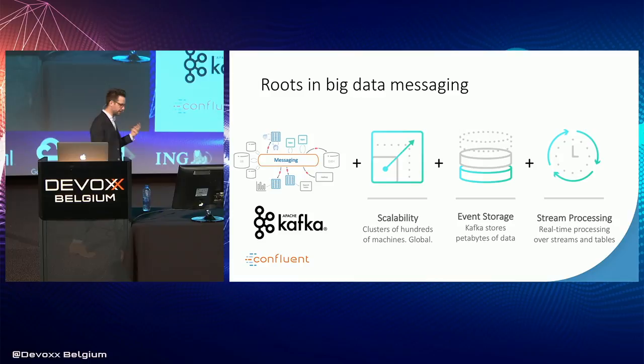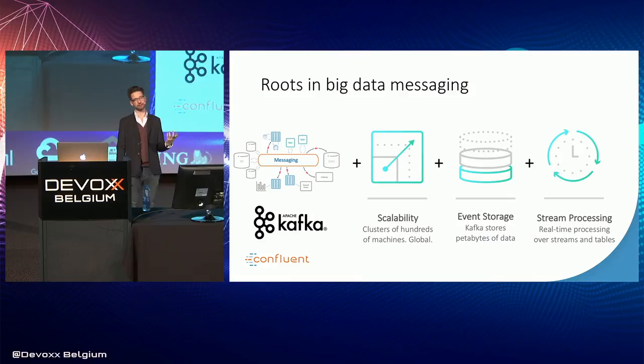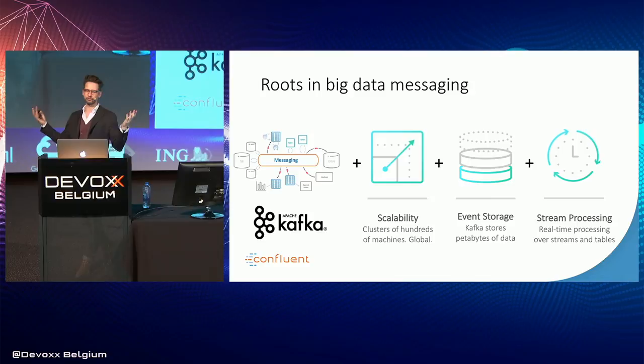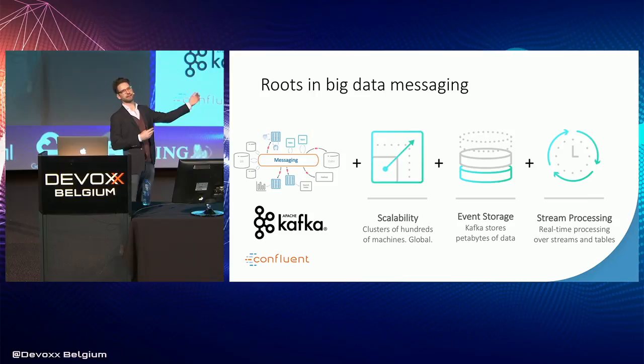The roots of Kafka really sit in big data messaging. If you understand a messaging system, you understand Kafka at a pretty high level. Kafka provides a number of useful properties. It has very good scalability and high availability — we can lose different machines and it will naturally recover. We can scale to clusters of hundreds of machines to support very high throughput use cases, as well as scaling across different geographies.